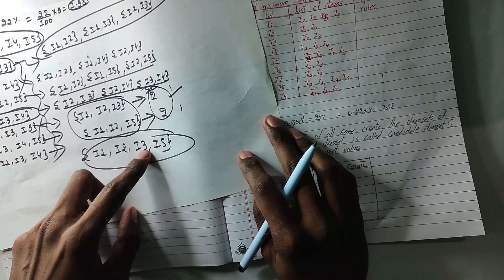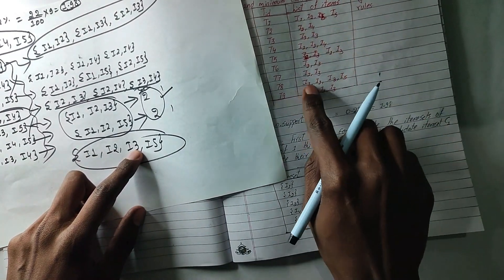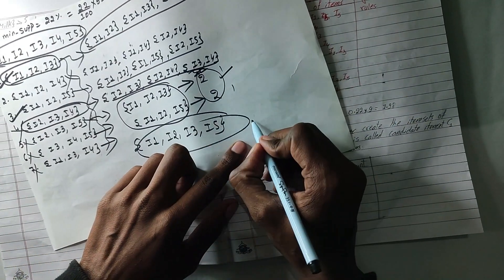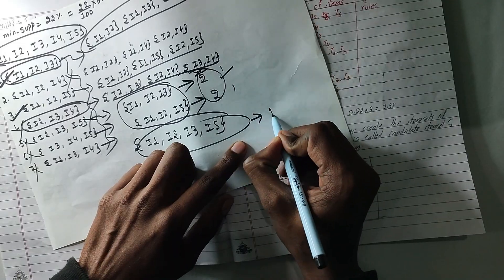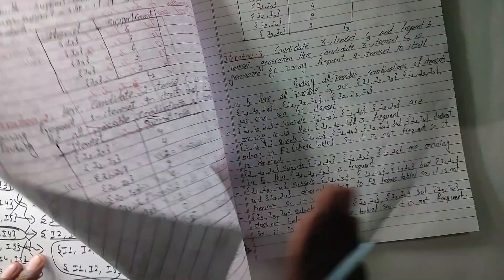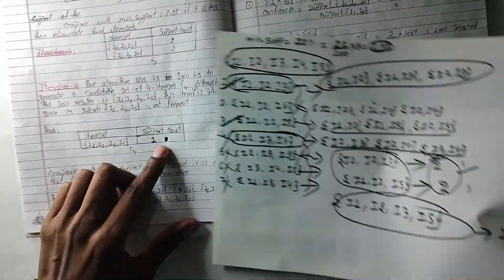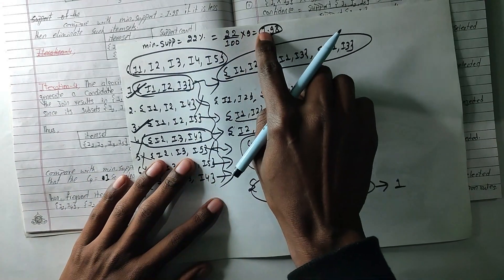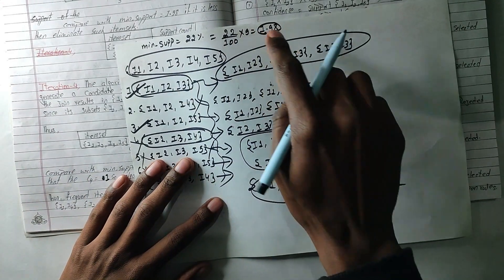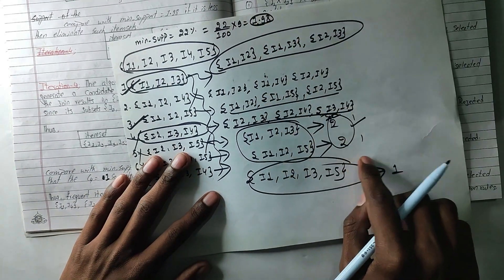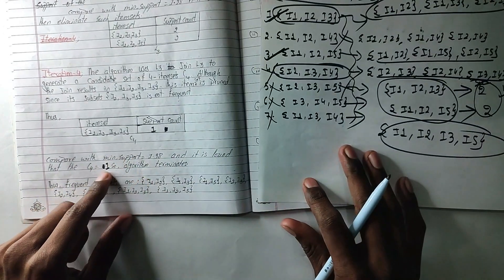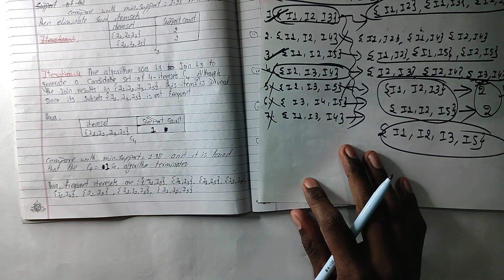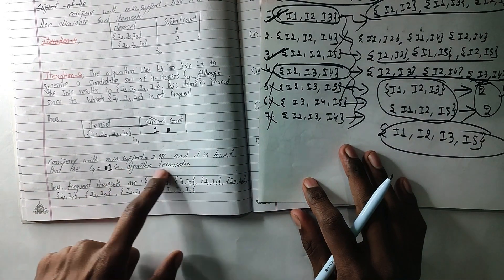The 4th itemset is: 1, 2, 3, 5. One, two, three, five. Here we have to compare — as you can see there is minimum support. There is no place so there is no place. Then we discard and terminate. This is the terminated step.